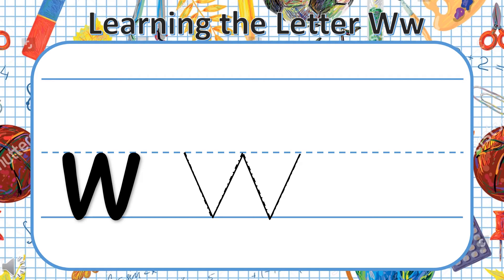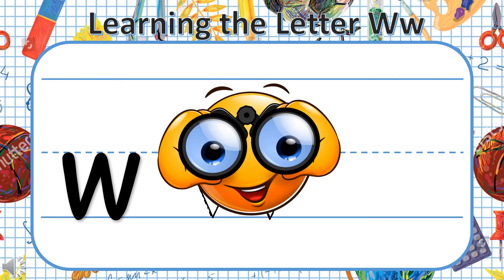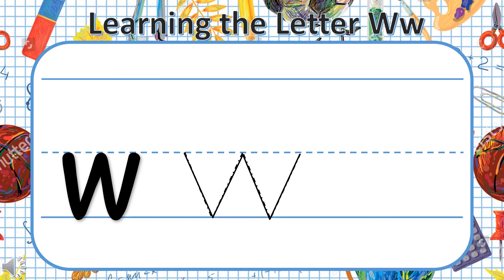Now we are going to write the letter W, so watch carefully and follow as Teacher Michelle shows you. Again we are going to start at the middle line — can you see the red arrow? Put your pencil there. Go down to the bottom line and stop. Don't lift your pencil. Go back up to the middle line and stop, then go back down again to the bottom line, and again up to the middle line. And then we are finished.